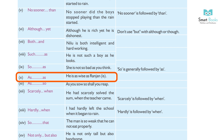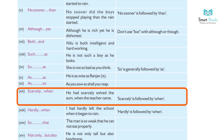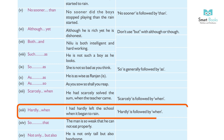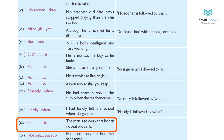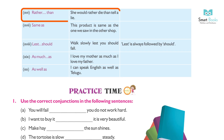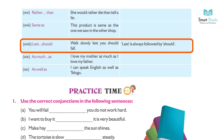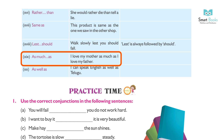8. Such...as — He is not such a boy as he looks. 9. So...as — She is not so bad as you think. 'So' is generally followed by 'as'. 10. As...as — He is as wise as Ranjan. 11. As...so — As you sow, so shall you reap. 12. Scarcely...when — He had scarcely solved the sum when the teacher came. 'Scarcely' is followed by 'when'. 13. Hardly...when — I had hardly left the school when it began to rain. 'Hardly' is followed by 'when'.